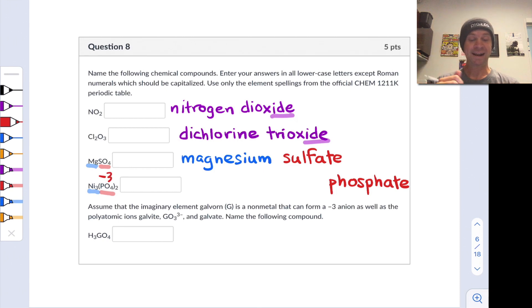In order to balance that charge, the individual nickels must have a charge of plus two. So what we're looking at here is nickel two phosphate with the nickels in the plus two oxidation state or with plus two charge.